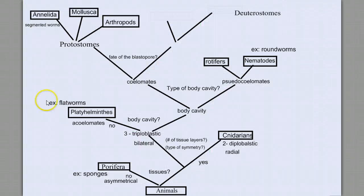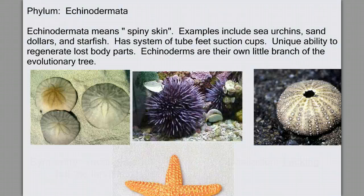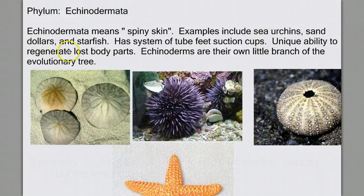So we're on the deuterostome branch, and we'll start with the phylum Echinodermata. The name Echinodermata means spiny skin and includes animals such as sea urchins, sand dollars, and starfish.